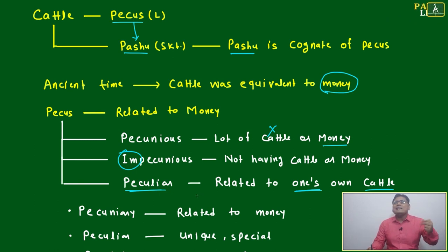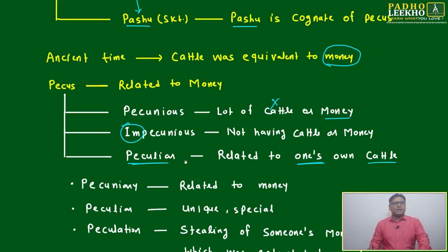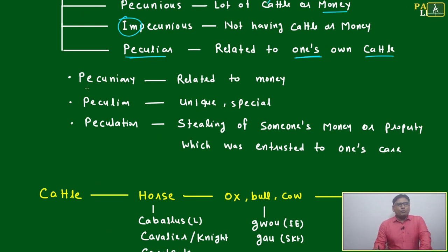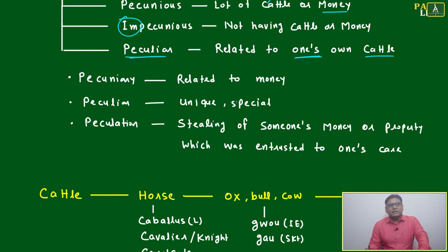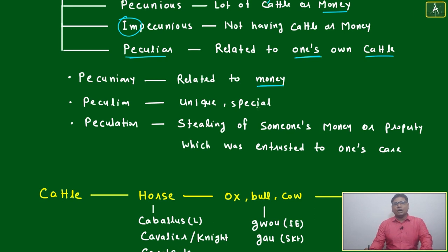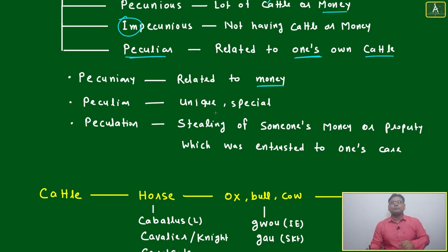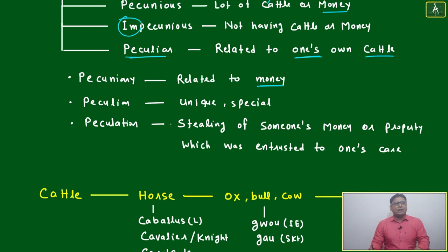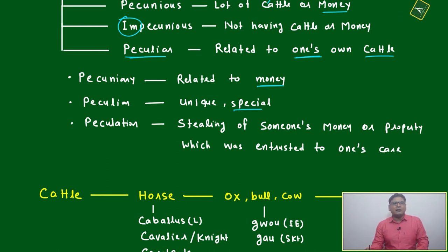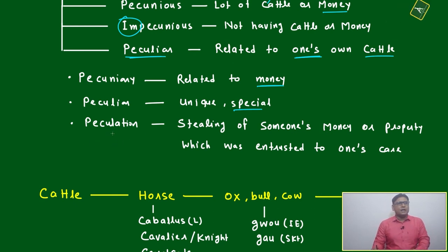Now the meaning of 'peculiar' is 'something different' — that is a figurative meaning. In ancient times it was a literal meaning. Similarly, 'pecuniary' — anywhere you find the word 'pecuniary', it will always be related to money. It is related to cattle originally, but now it is used related to money in a symbolic form. Earlier it was cattle; now in place of cattle, notes, money, rupees, and dollars have come. Peculiar now means unique and special.